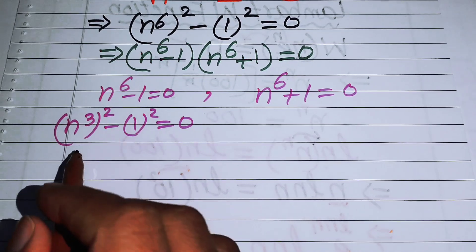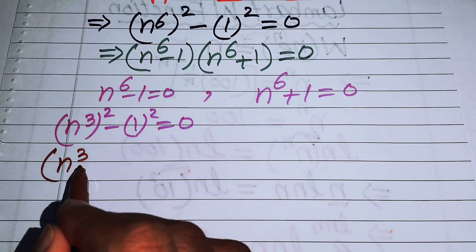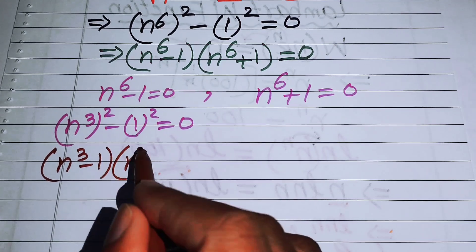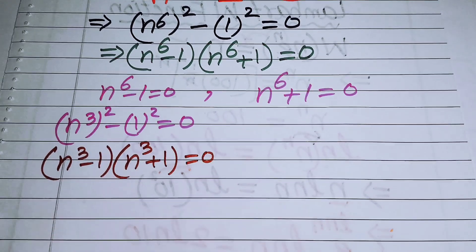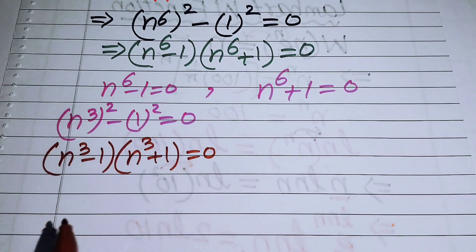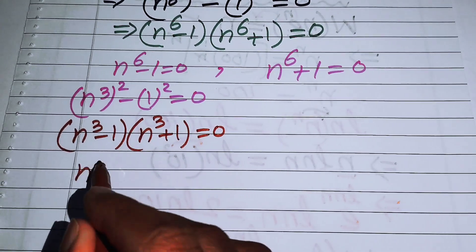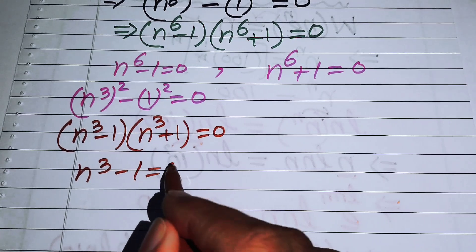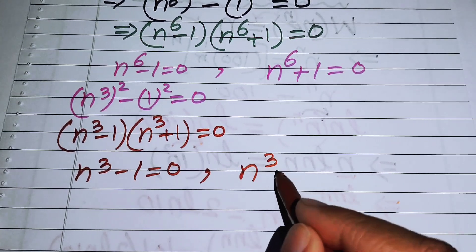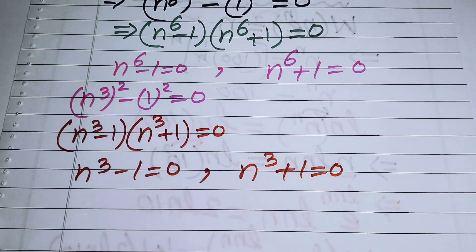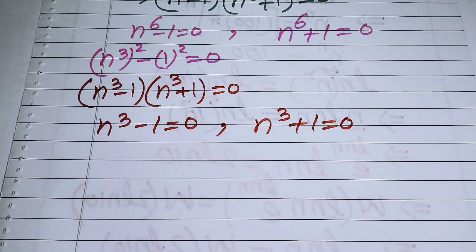We will use the difference of squares identity again. According to this identity we write it as n cubed minus 1 times n cubed plus 1 equals 0. So here we again get two cases: the first is n cubed minus 1 equals 0, and the second case is n cubed plus 1 equals 0.